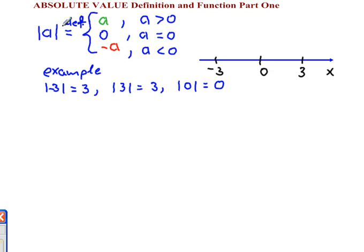So initially, what you see here on the top of the screen is a symbol for absolute value, those two vertical lines.